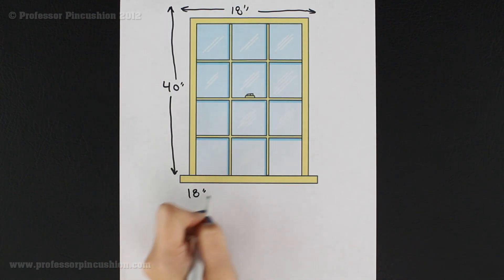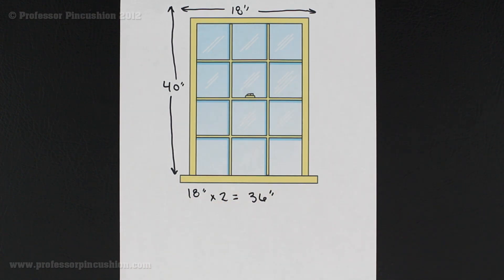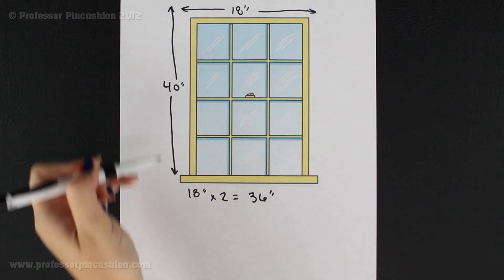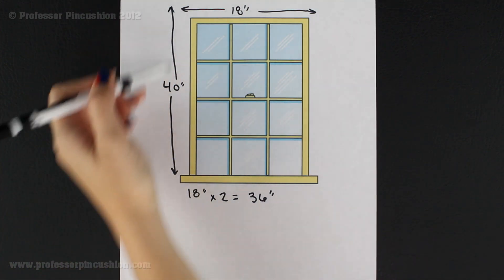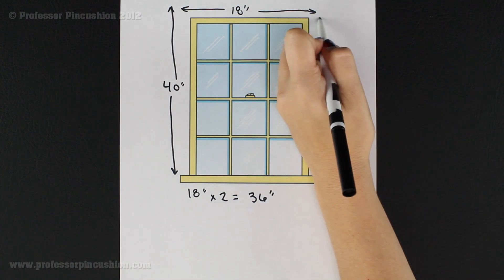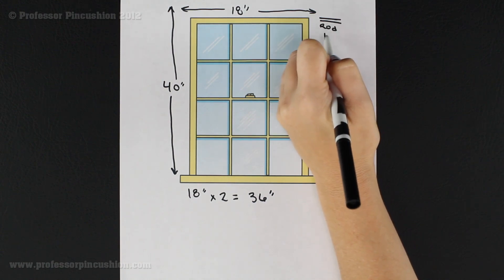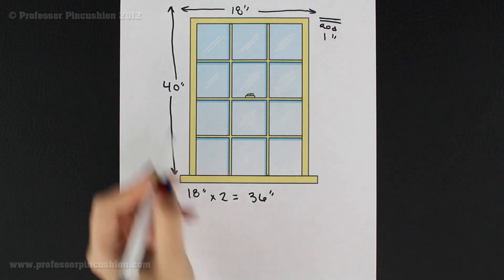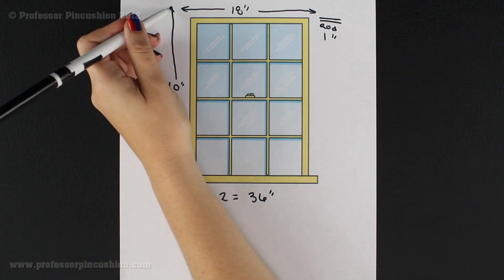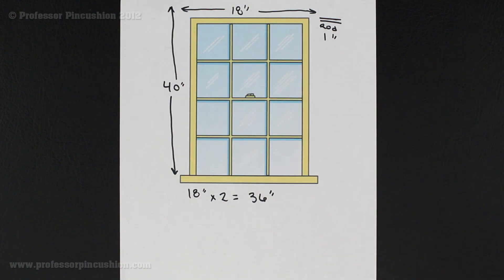So 18 inches times two equals 36 inches. Now we're going to worry about the length of the curtain. If I just get 40 inches, that is not taking into account the curtain rod or the hemline. So first let's tackle the curtain rod. Let's say my curtain rod is one inch in width, and that is included in my 40 inches because I went up to the top edge of the rod and then down whatever my length is.